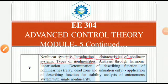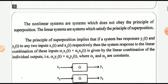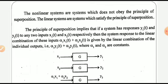This presentation covers topics from Module 5: introduction to nonlinear systems, characteristics of nonlinear systems, and types of nonlinearities. A system which does not obey the principle of superposition and the principle of homogeneity is nonlinear. If it obeys both principles, the system is linear. We can illustrate this by means of the following block diagram.